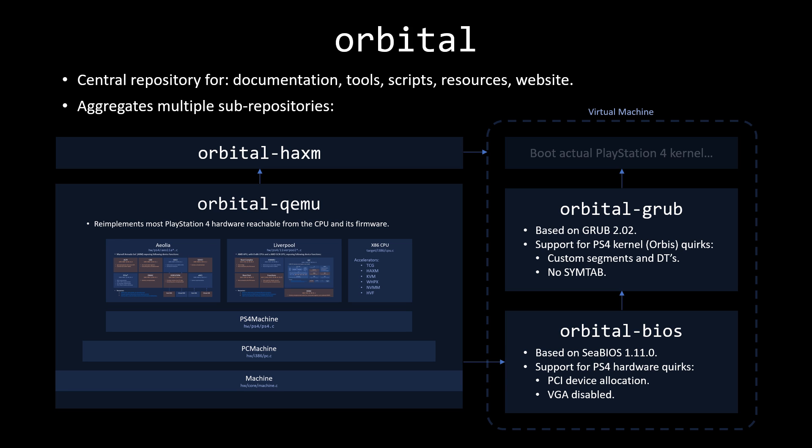This new set of slides will expand a little bit into the organization of the project, repositories and future plans. What you just saw in the video is possible thanks to different subprojects within Orbital, and those subprojects are aggregated in the main Orbital repository on GitHub, which contains documentation, tools, scripts, resources, and the very lame website that we have.